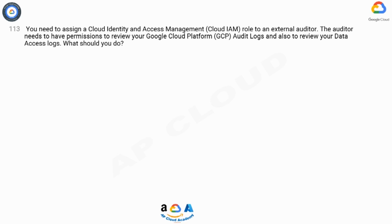Question 113: You need to assign a Cloud Identity and Access Management (Cloud IAM) role to an external auditor. The auditor needs to have permissions to review your Google Cloud Platform (GCP) audit logs and also to review your data access logs.